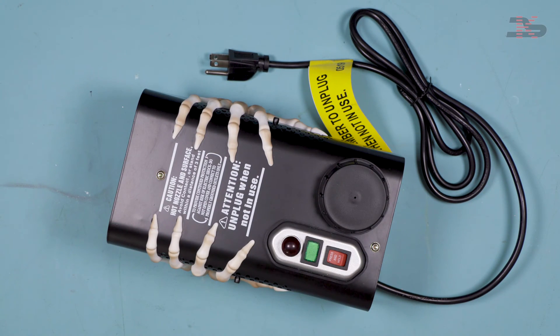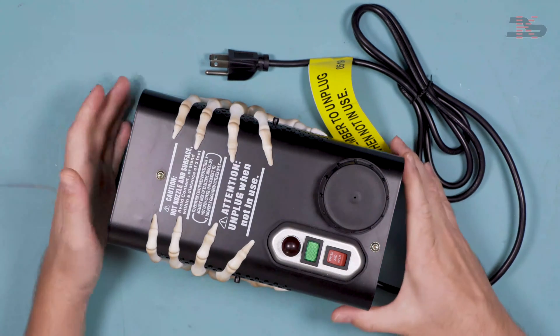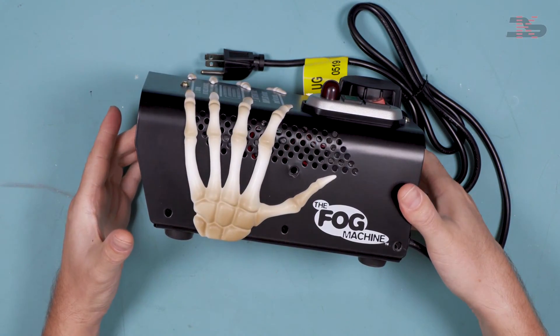This is just your basic manually operated fog machine. It's available at Walmart. This is the 2019 version. They changed it up a little bit.